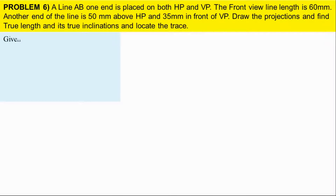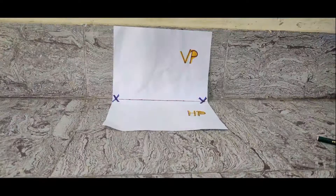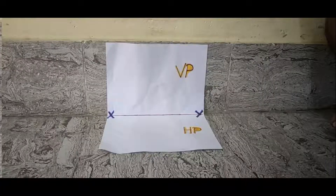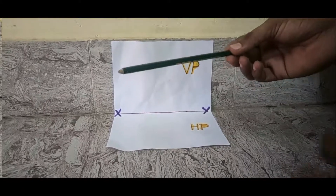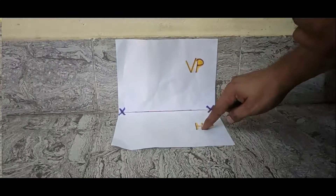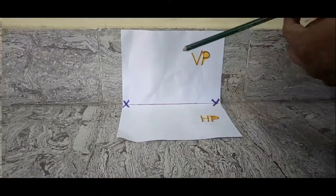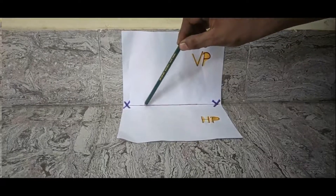Given: the line is on HP as well as VP. We have point A on both HP and VP, so we need to establish its position carefully.